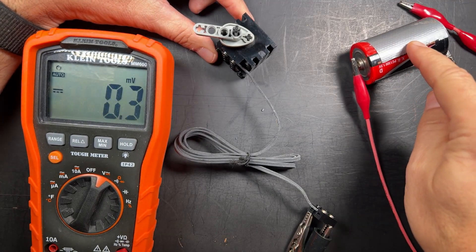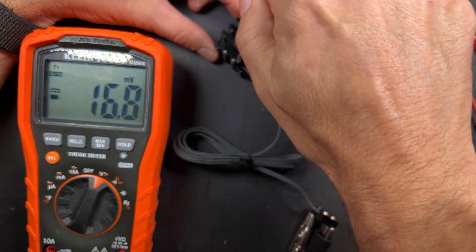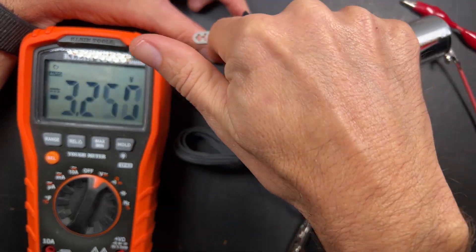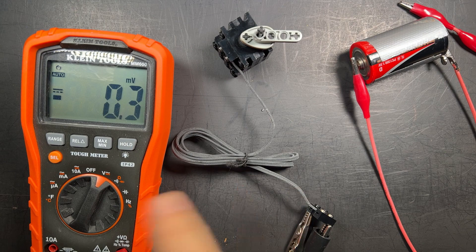So if you apply 1.5 volt battery to this, it spins. If I spin it, I get a voltage. And yeah, I can go the different way.